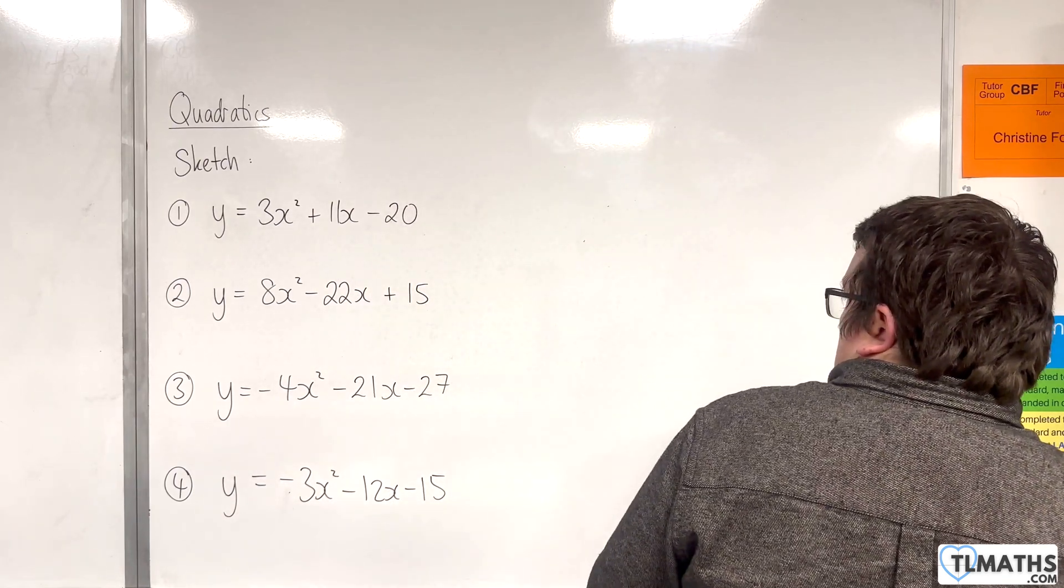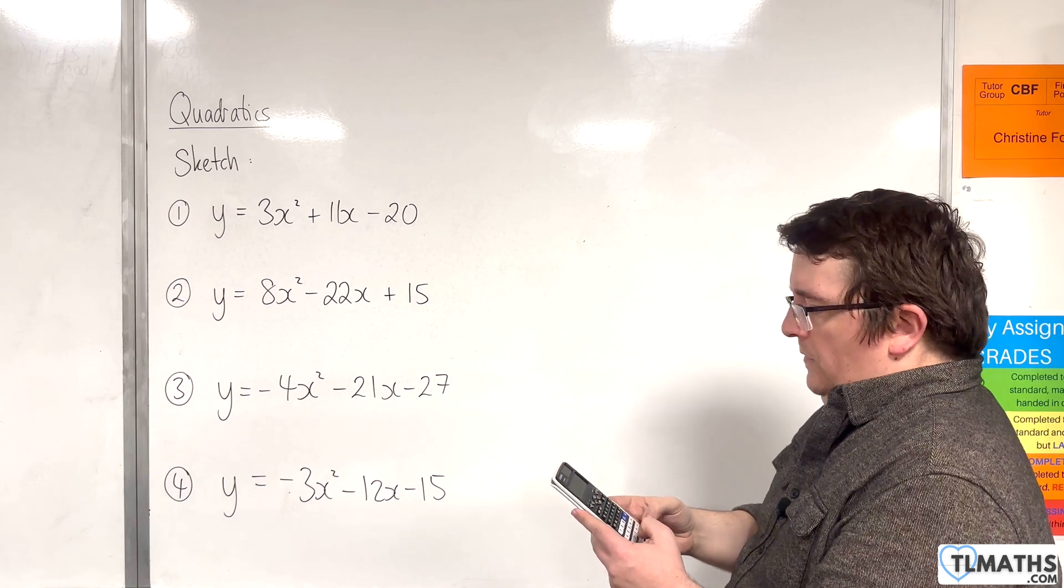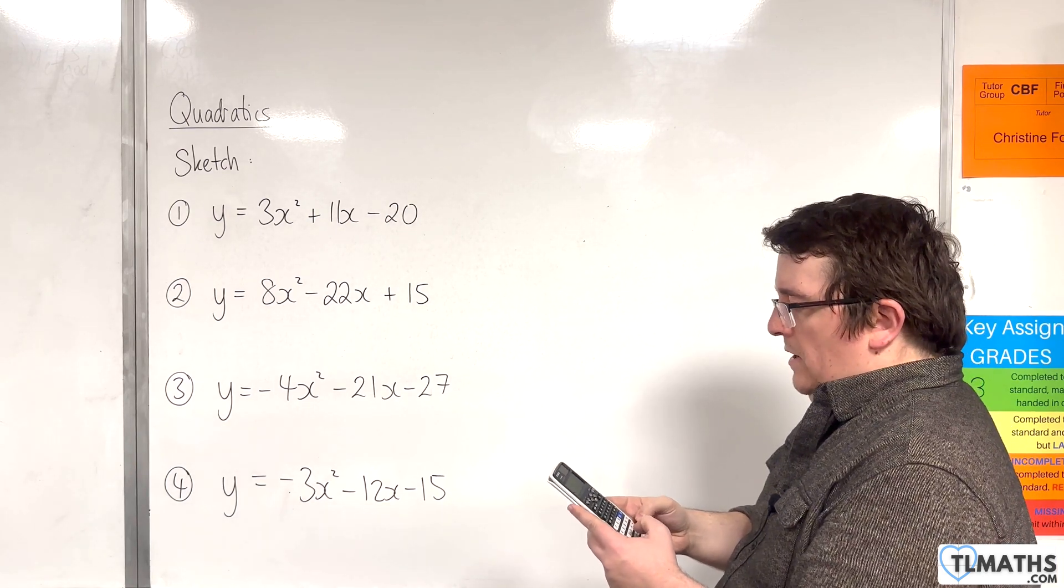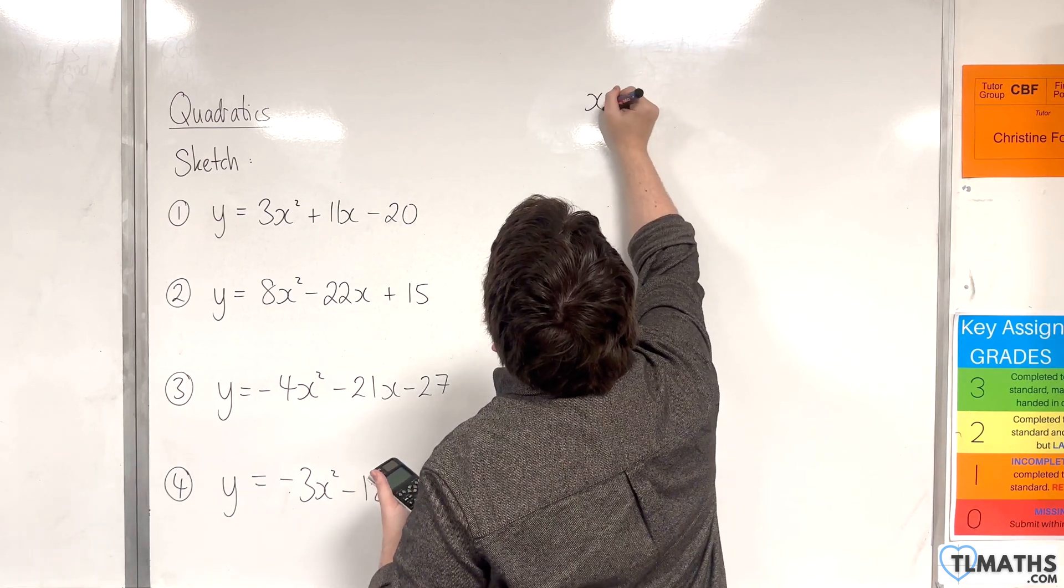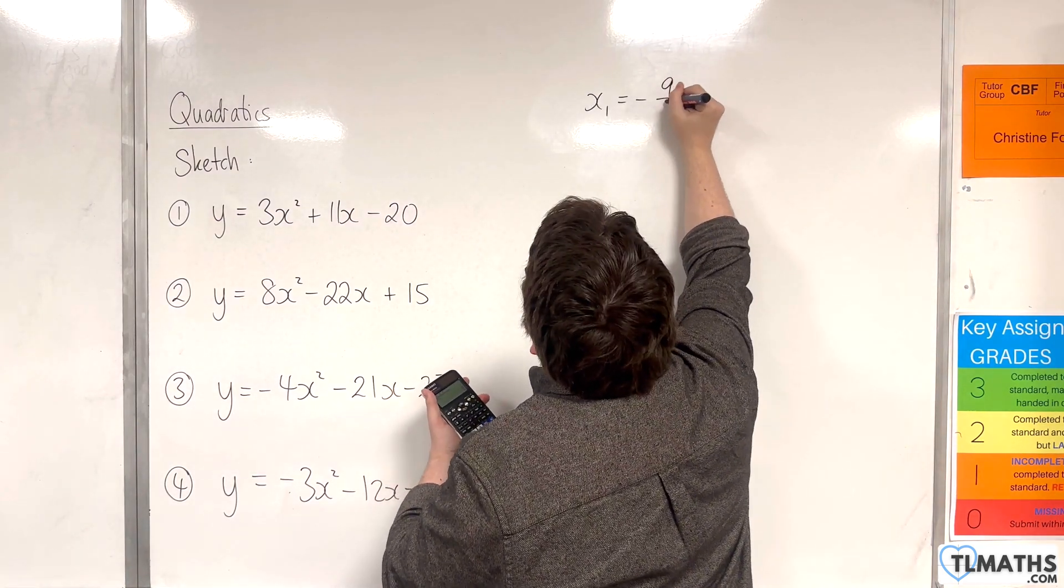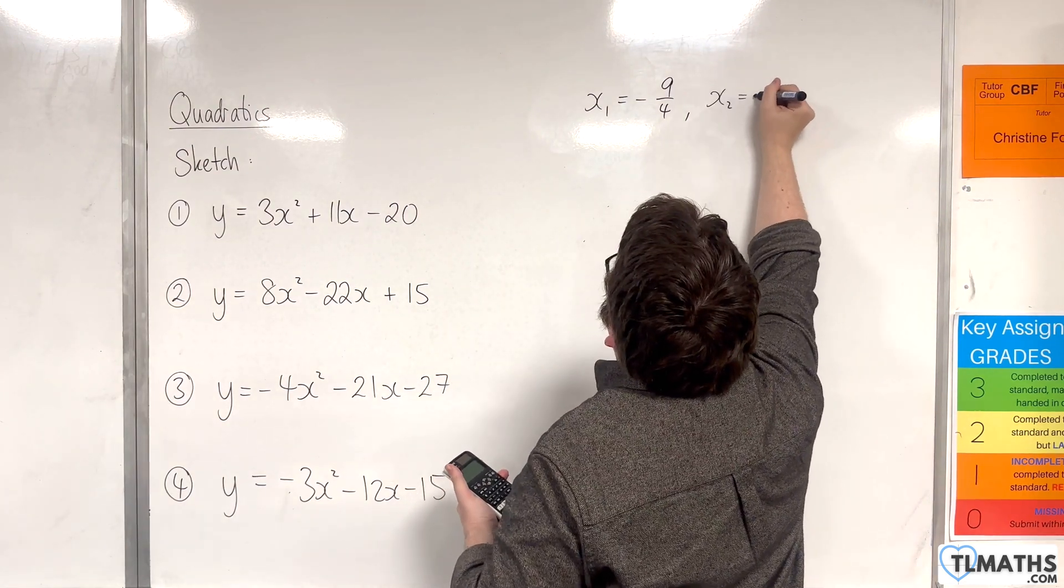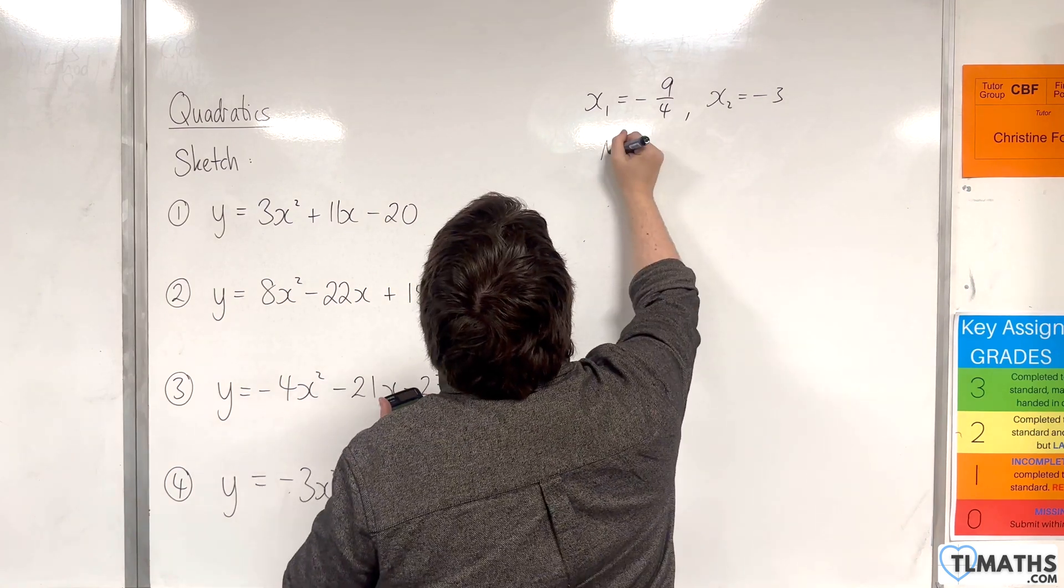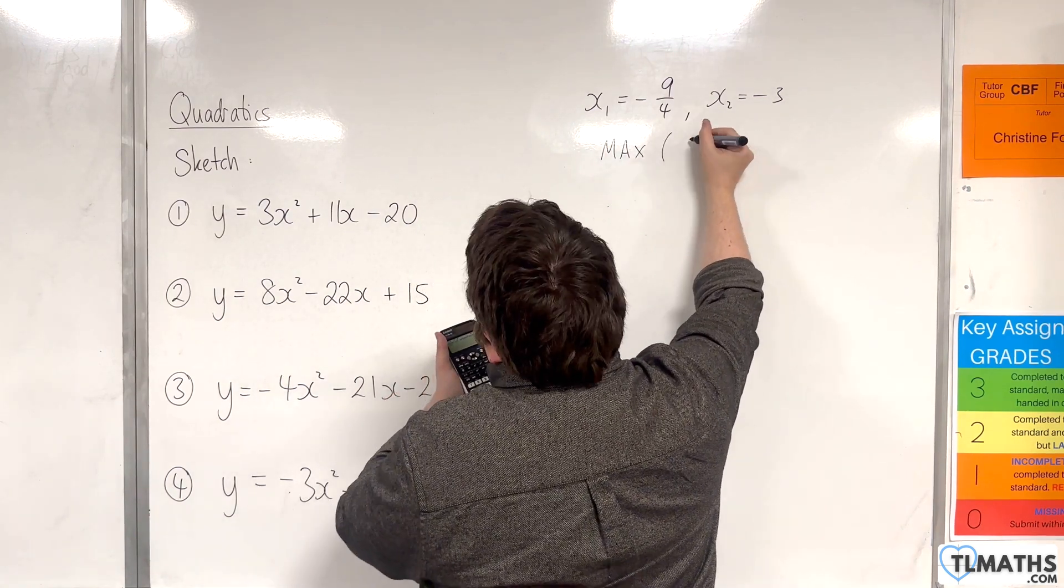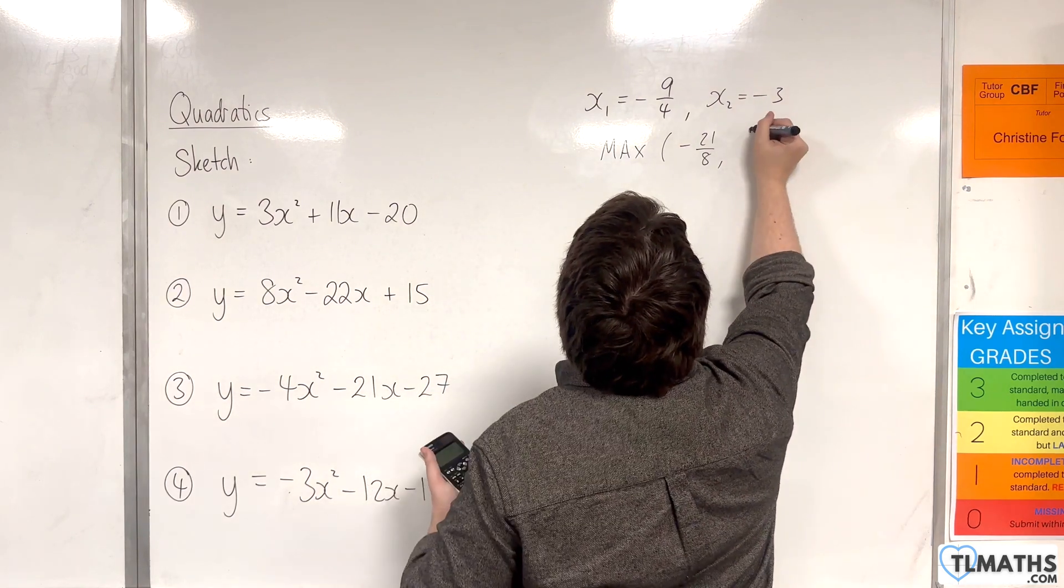Number 3. So we have -4, -21, and then -27. So x₁ is -9/4, x₂ is -3. And then maximum this time, so maximum point, is -21/8 and 9/16.